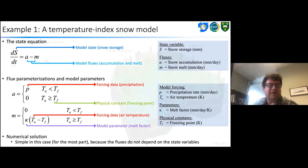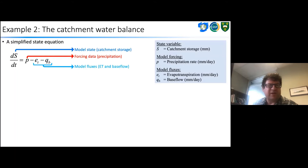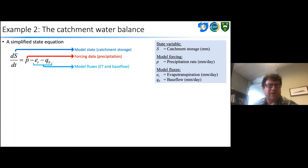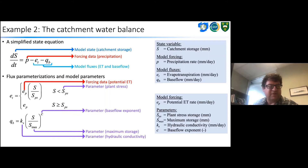A slightly different example is the simplified state equation for the catchment water balance, where the change in storage with time equals precipitation minus evapotranspiration minus base flow. Evapotranspiration may equal potential ET scaled by storage when it's below the plant stress threshold. Base flow is some transmission coefficient times storage over maximum storage to some exponent. The base flow exponent, maximum storage, and hydraulic conductivity are all model parameters. We need to be careful with the numerical solution here because the model fluxes depend on the state variables.